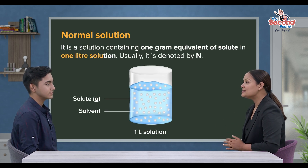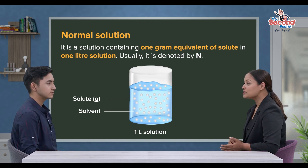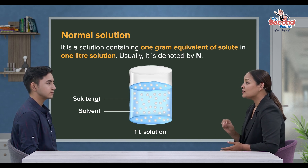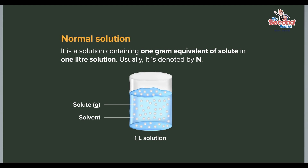If we have a 1-liter solution, we put the normality unit in normal solution, and it is usually denoted as the normality unit. In other words, a normal solution is a solution containing 1 gram equivalent of solute in 1-liter solution. Usually, it is denoted by N.